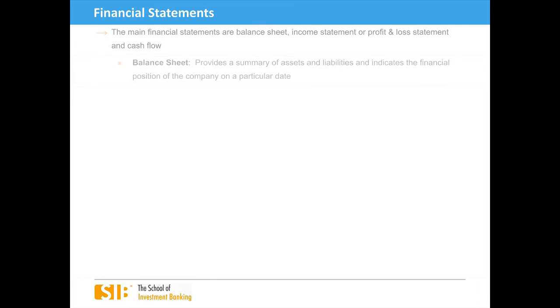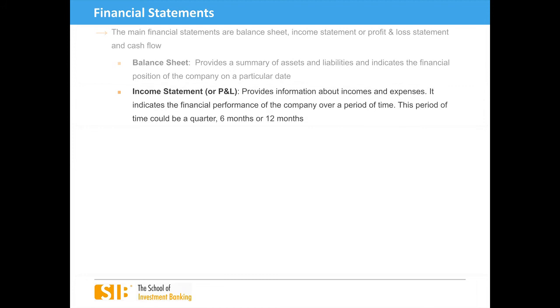The main financial statements are the balance sheet, income statement or profit and loss statement, and cash flow. A balance sheet provides a summary of assets and liabilities and indicates the financial position of the company on a particular date. The income statement or P&L provides information about incomes and expenses, and indicates the financial performance of the company over a period of time — this period could be a quarter, six months, or 12 months.